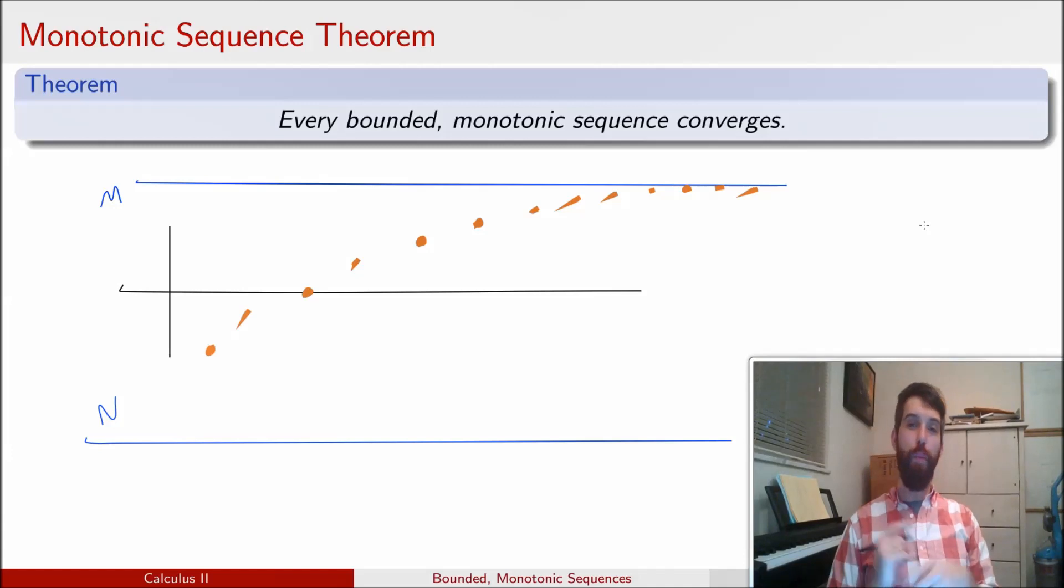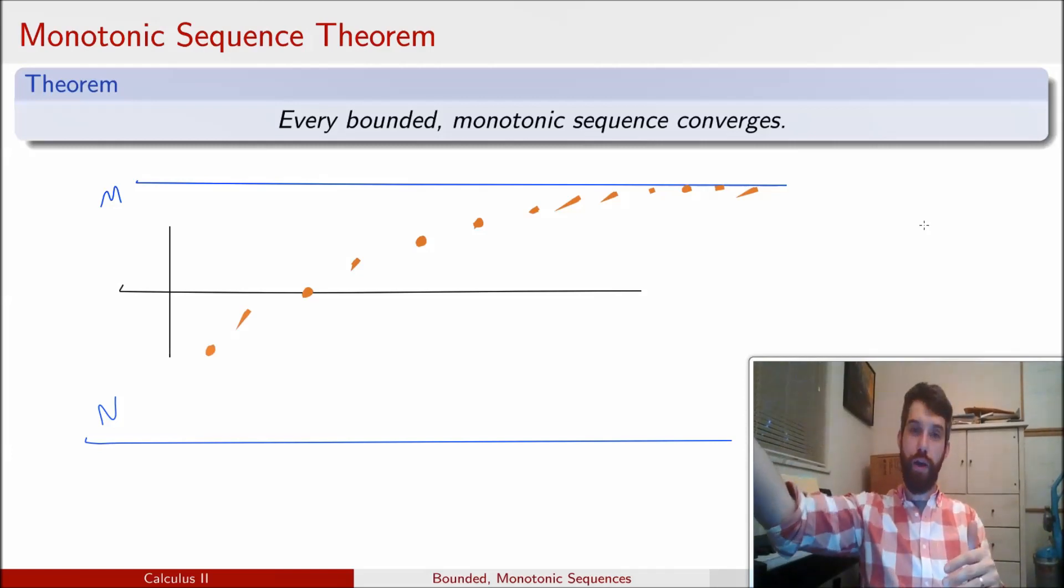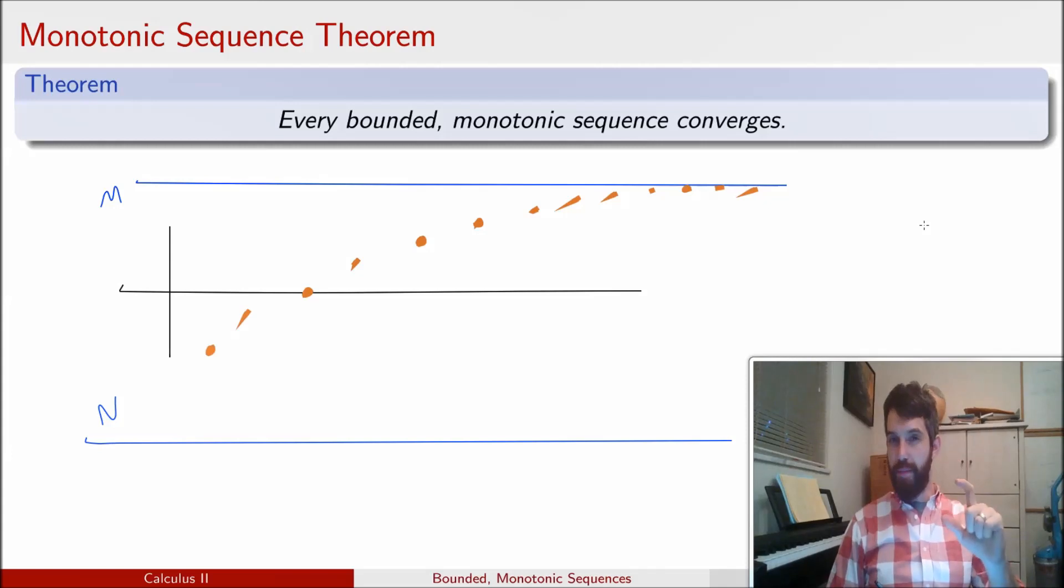And note that both properties are needed. If you didn't have the boundedness, you could have an increasing sequence that was, say, 1, 2, 3, 4 that goes on forever. If I only had bounded, then it's quite possible that my terms would sort of oscillate in between these bounds. But just because they're oscillating doesn't mean they converge. So I need to have both the monotonicity and the boundedness to ensure convergence.